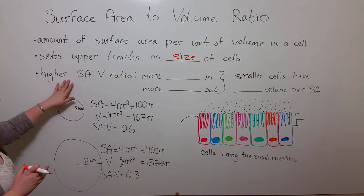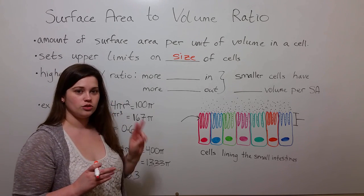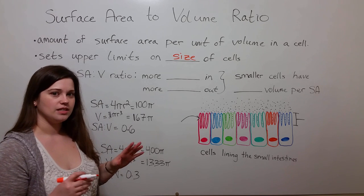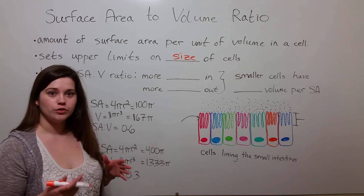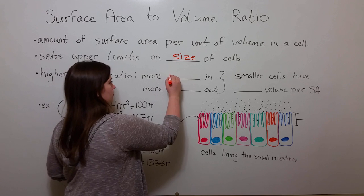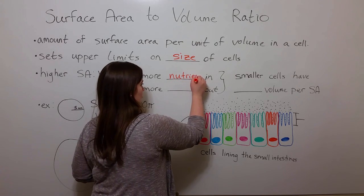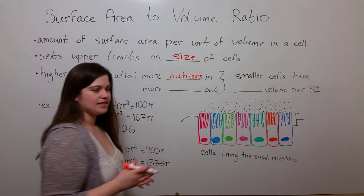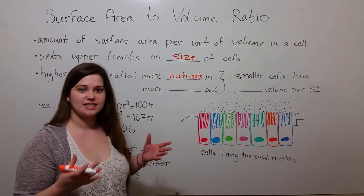A higher surface area to volume ratio means two things for the cell. It means the cell can get more nutrients in, and the cell can get more wastes out.